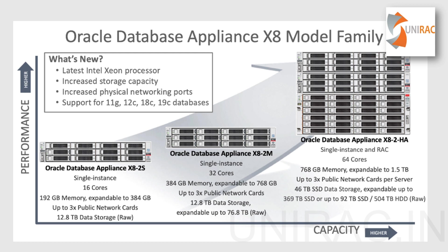For high availability, the X8 2HA has 64 cores, supports RAC, and offers up to 92 terabytes of SSD storage with a minimum of 46 terabytes of SSD data storage. It supports the latest Intel Xeon processors with increased storage capacity, additional physical network ports, and also supports Oracle Database 19c. In terms of performance and capacity, it is significantly higher than the other X8 models.